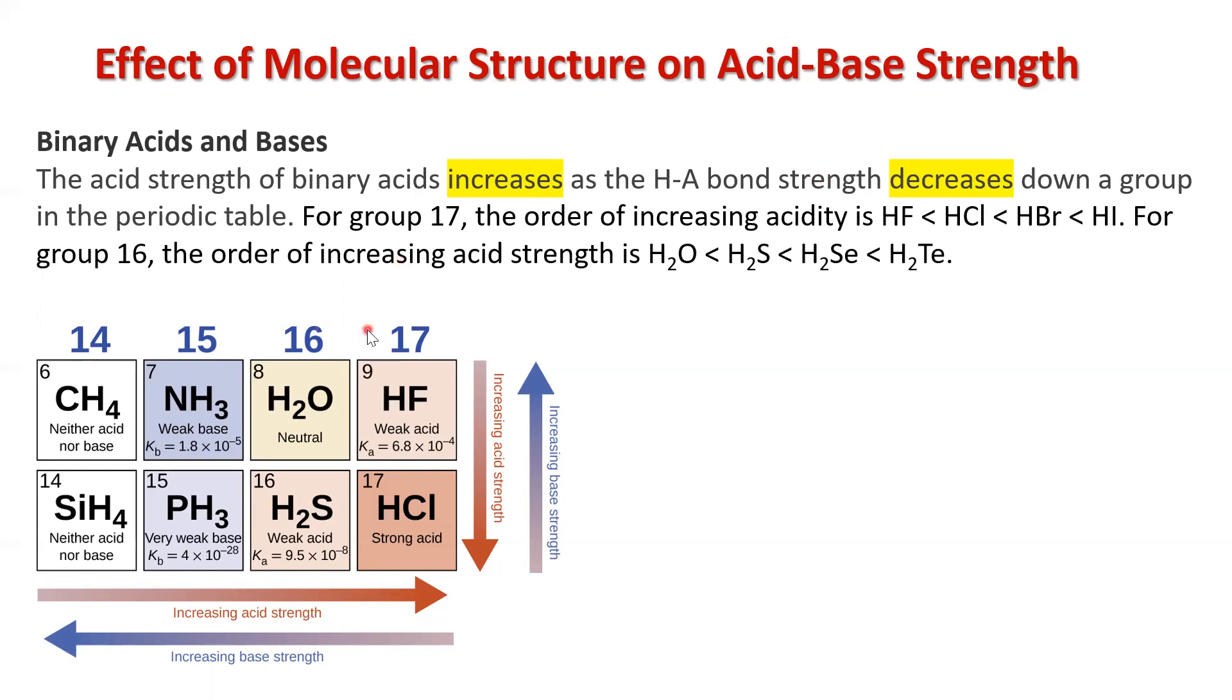So if we were to look at group 17, if we were to look at the halogens, the order of increasing acidity matches up with the order of decreasing bond strength. And bond strength decreases as we go down a group. So as we go down a group, generally speaking, the strength of the acid increases.